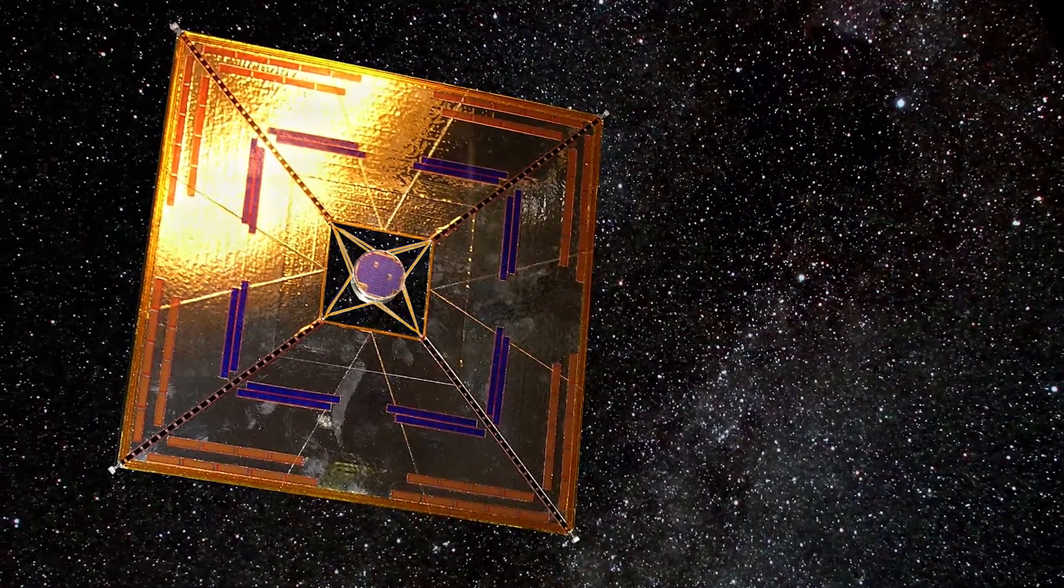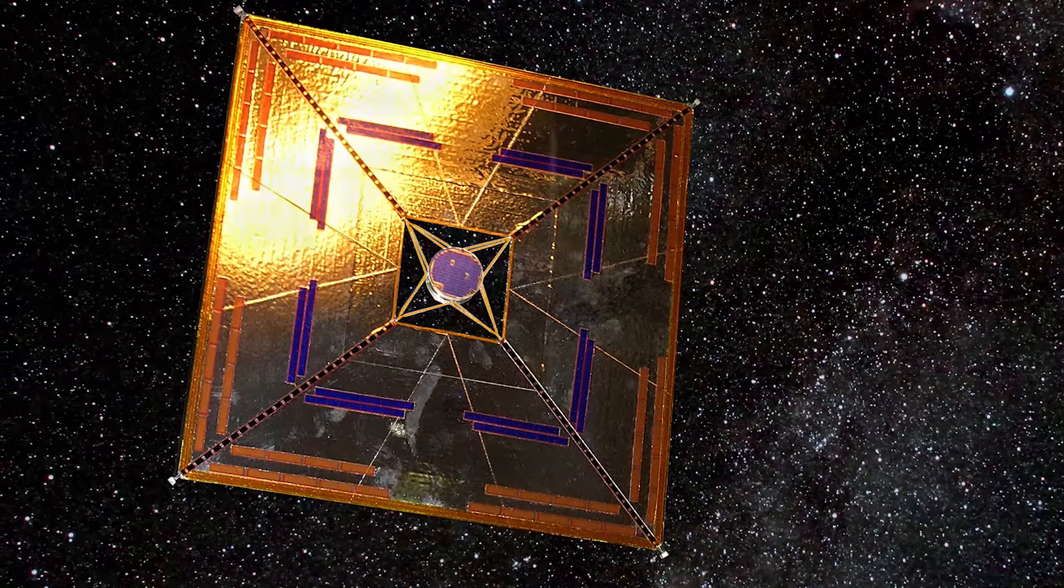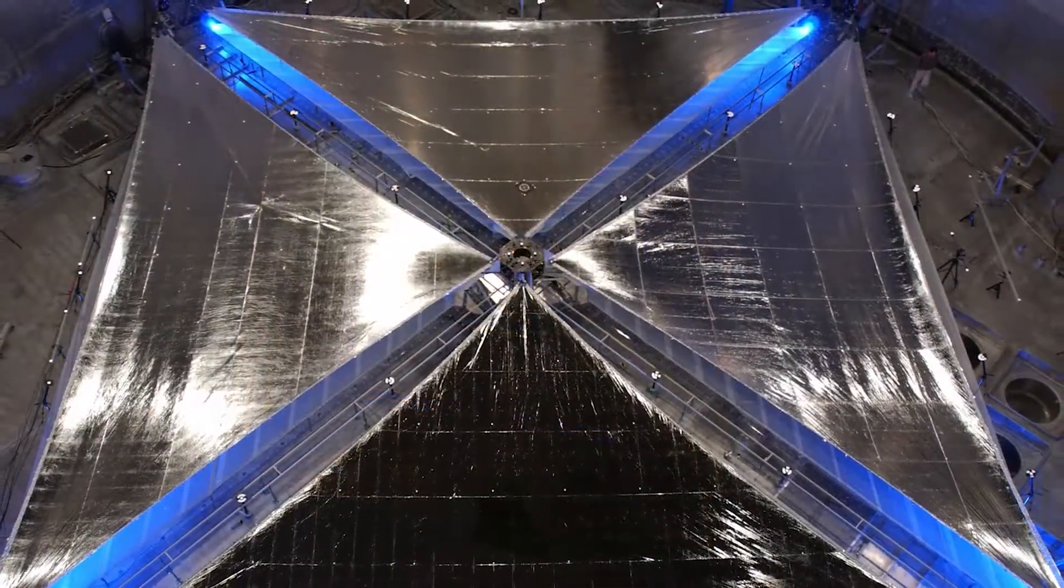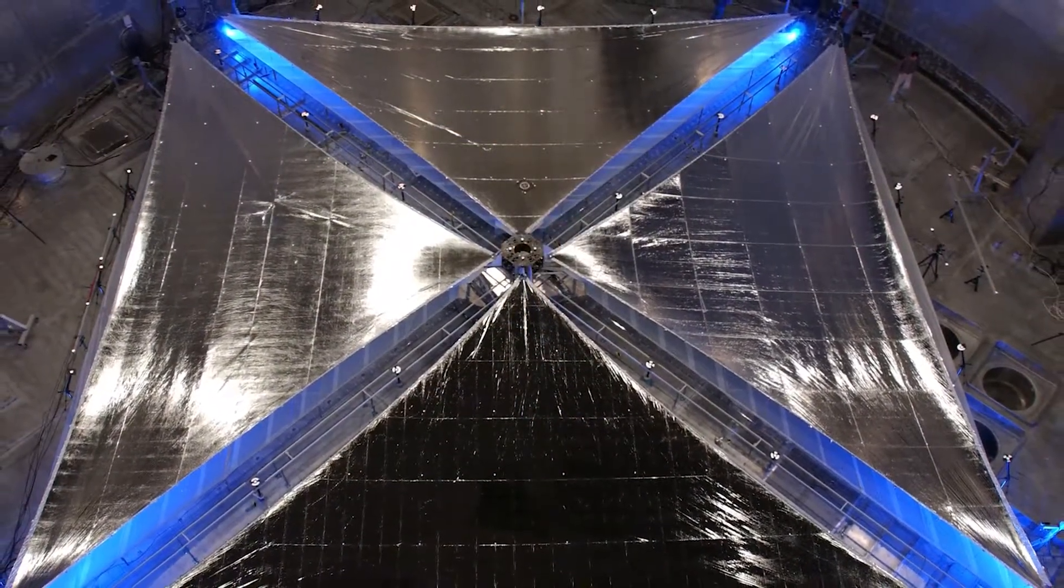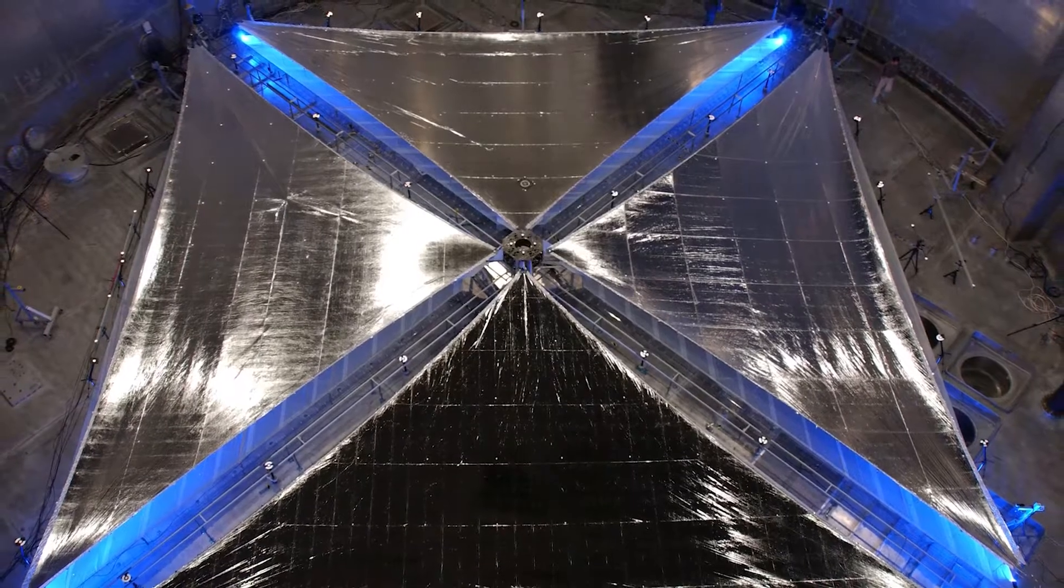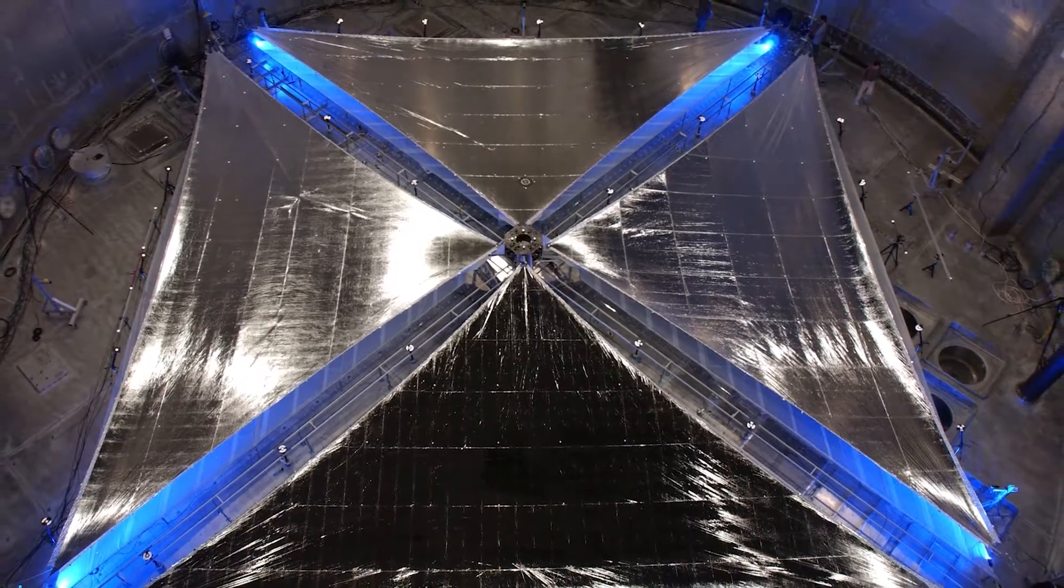As we were working on these solar sails, we realized with advancements in thin film solar cells, now C-E-L-L, that there is a natural marriage. We can embed these thin, flexible solar cells onto these very large scale thin solar sails and make a very large, completely thin film, low mass solar panel for our spacecraft.